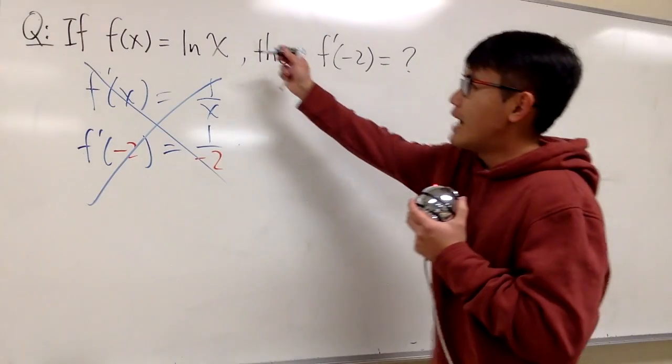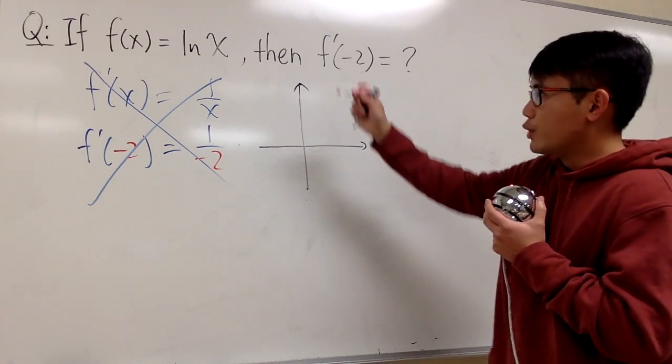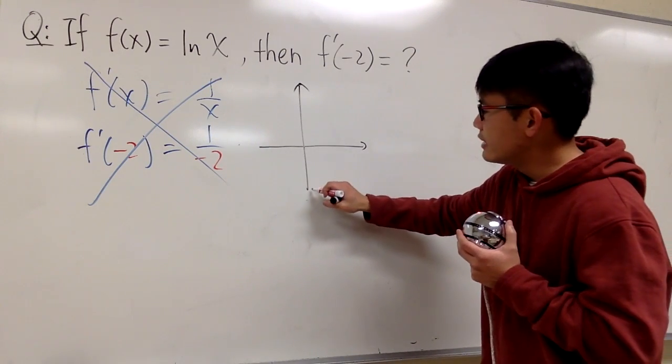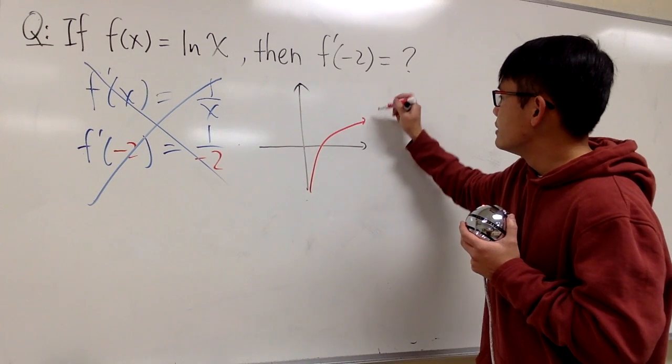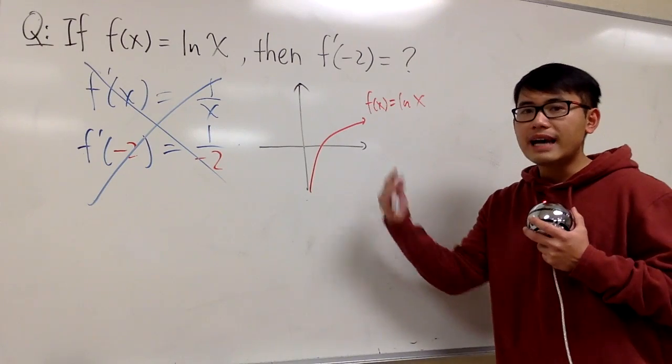Let's take a look at the graph of ln x, right here. And as we all know, when we graph ln x, we actually just get this, right? And this is the function ln x. We don't have this side, right?